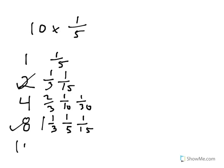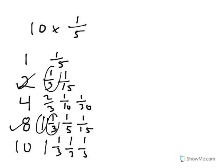So, ten is eight plus two, which means for ten, it's the sum of all these. I'm just going to write one, one-third—I always put them in order—one-third, one-fifth, one-fifteenth, one-fifteenth.